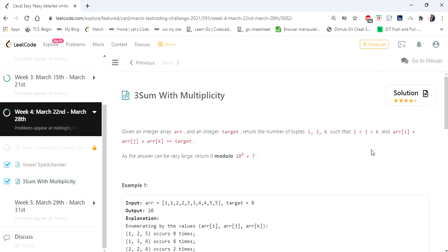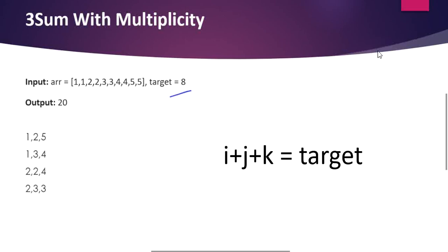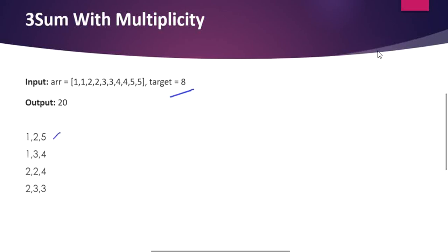Let's understand this problem with an example. Here is a given example integer array and our target is 8. Our job is to find three numbers that sum up to 8 from the given array. The possible combinations are: 1, 2, 5 can form 8; 1, 3, 4; 2, 2, 4; and finally 2, 3, 3 can form 8.